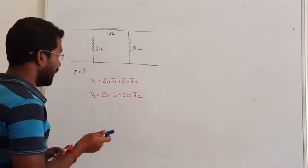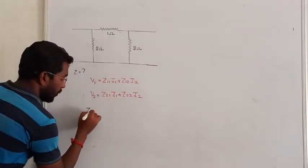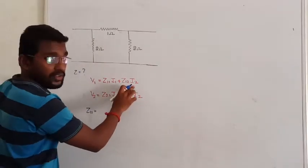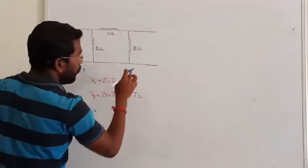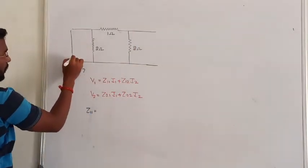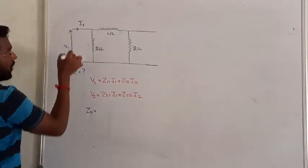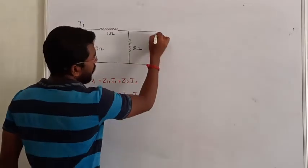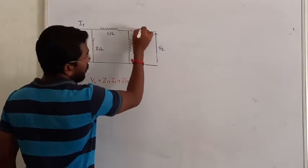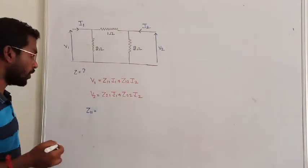First, by calculating the value of Z11, we have to make the value of I2 as 0. And secondly, we have to open the port. In the network, we apply voltage V1 and pass current I1. We apply voltage V2 at port 2 and pass current I2.